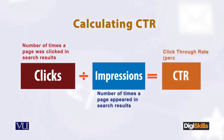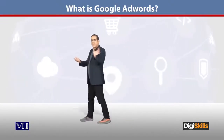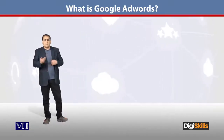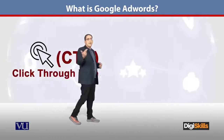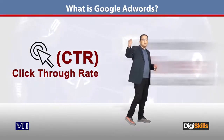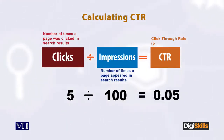Click Through Rate — let me explain with an example. If an ad word has 100 impressions at a particular time, meaning the advertisement appeared 100 times in search results, and out of those 100 impressions the user clicked on the ad 5 times, then CTR equals 5 divided by 100, which is 0.05.